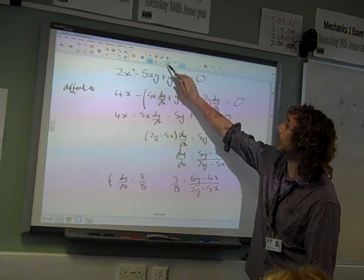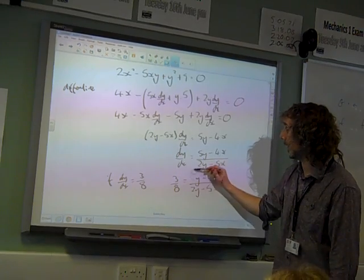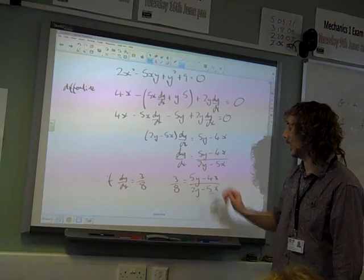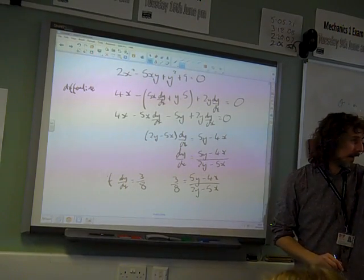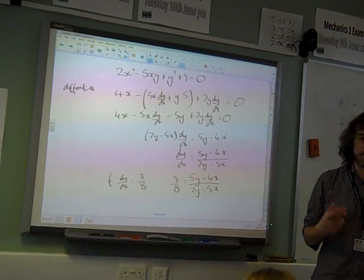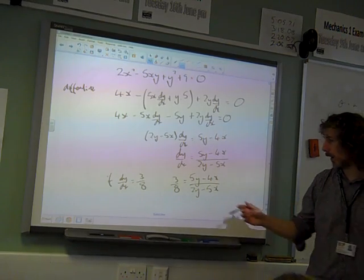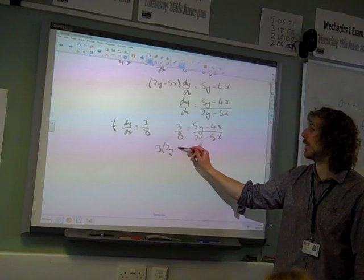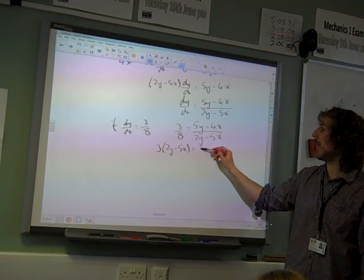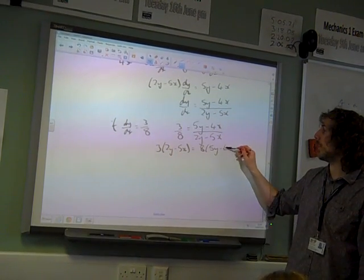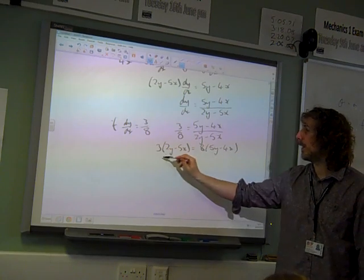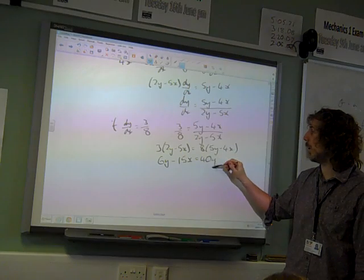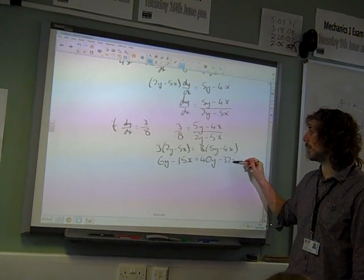That number there was a 5, but somehow it looks extremely 6-ish. How can we tidy this up? We need a simple relationship between x and y. So 3 times (2y minus 5x) equals 8 times (5y minus 4x). Multiplying through: 6y minus 15x equals 40y minus 32x.